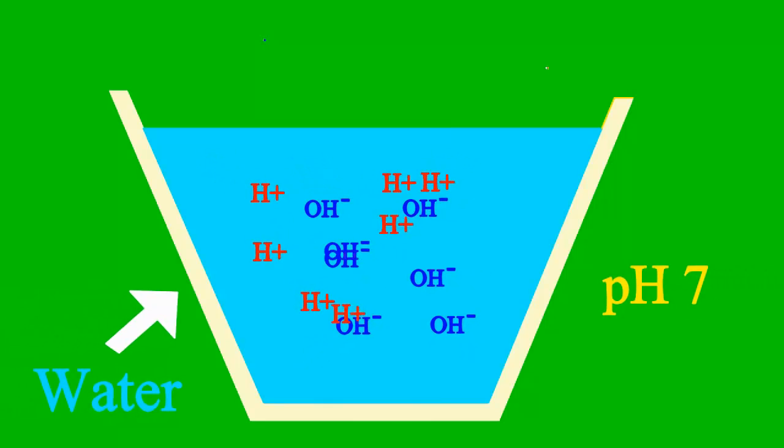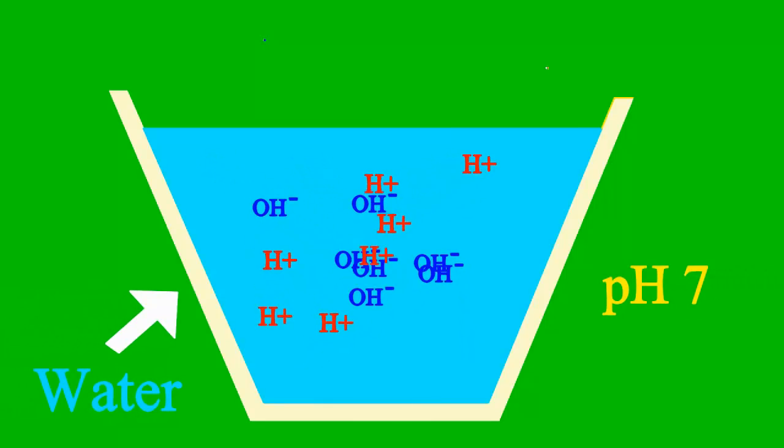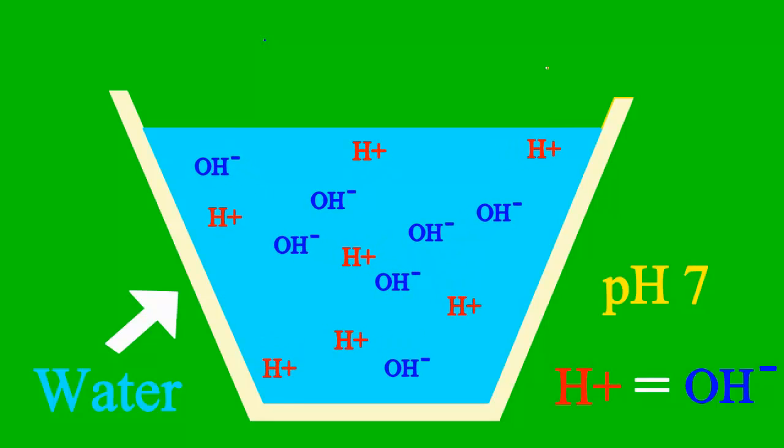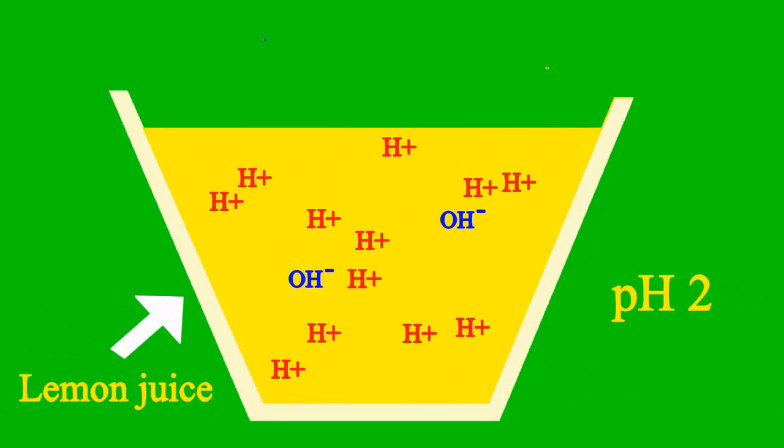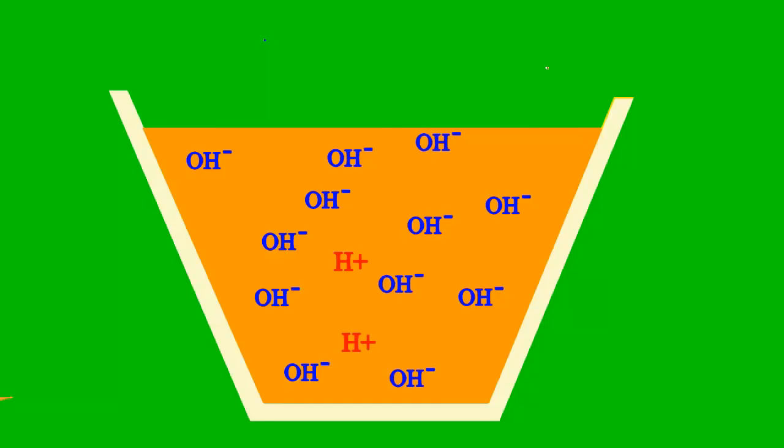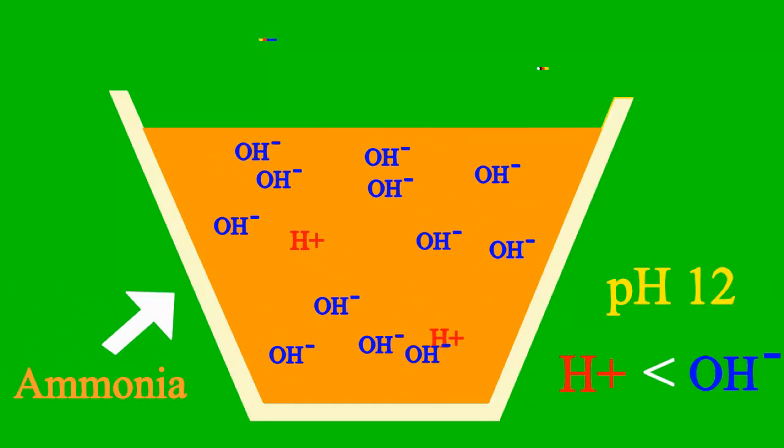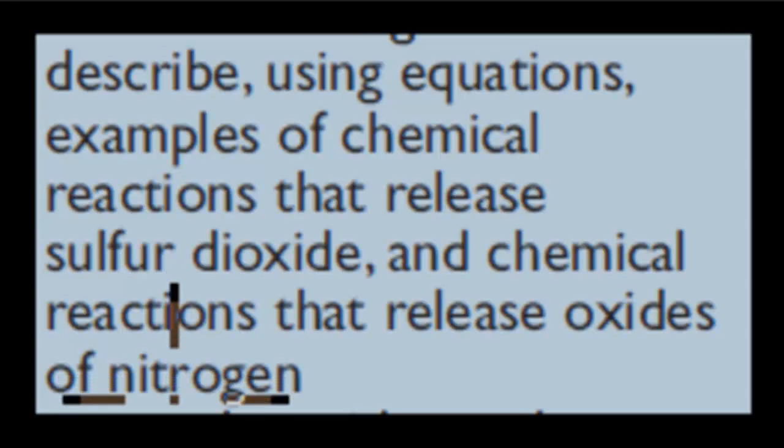When the pH is 7, then it's a case where the sample is neither an acid nor base. But less than 7, it's an acid. More than 7, it's a base all the way. Welcome back.